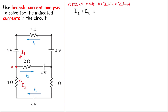That will equal the current that goes out, which is i2 — so i1 plus i3 equals i2. We can isolate for i1: i1 equals i2 minus i3. That is all we can do with this equation for now.